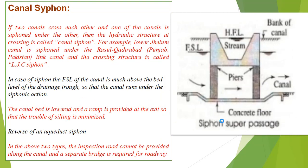The canal siphon: if two canals cross each other and one of them is siphoned under the other, then the hydraulic structure at the crossing is called a canal siphon. For example, the Lower Jhelum Canal is siphoned under the Rasul–Qadirabad link canal, and the crossing structure is called the LJC siphon.